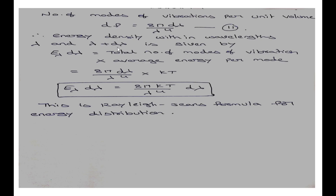The energy in the wavelength range λ to λ+dλ equals the total number of modes of vibrations multiplied by the average energy. The energy density is E(λ)dλ = (8π/λ⁴)·dλ × kT = 8πkT/λ⁴·dλ. This is the Rayleigh-Jeans formula for energy distribution. Here we used electromagnetic theory to calculate the energy distribution.